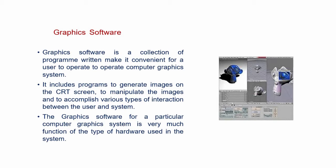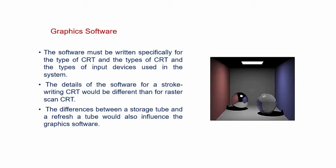The graphics software for a particular computer graphics system is very much a function of the type of hardware used in the system. The software must be written specifically for the type of CRT and the type of input devices used in the system. The details of software for stroke writing CRT would be different from raster scan CRT.